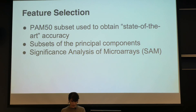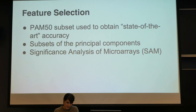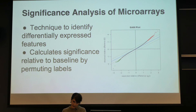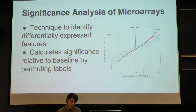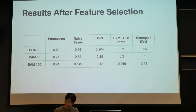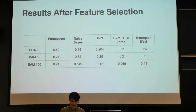Next we did feature selection. We used the PAM50 gene set, PCA, and also Significance Analysis of Microarrays (SAM) to obtain a statistically-based subset we thought might outperform PAM50. SAM, from a 2001 methodological paper, identifies differentially expressed genes by permuting the labels to establish a baseline significance from random chance, then rescales significance based on those random permutations. We used each of these approaches, comparing the first 50 principal components from PCA, the PAM50 set, and the top 100 genes identified as significant by SAM.